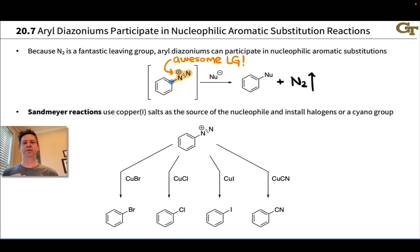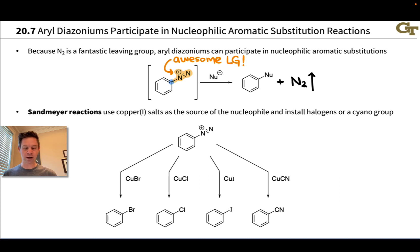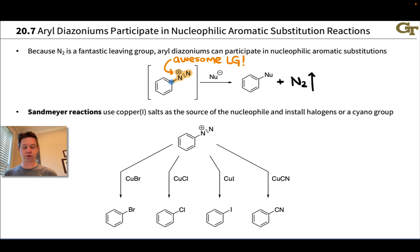The specific conditions used can be a little esoteric. In many cases we can't just treat with any nucleophile, but in some cases we can. An important general class of nucleophilic aromatic substitution reactions involving diazoniums uses an esoteric set of reagents known as Sandmeyer reagents — copper(I) salts. These are called Sandmeyer reactions.